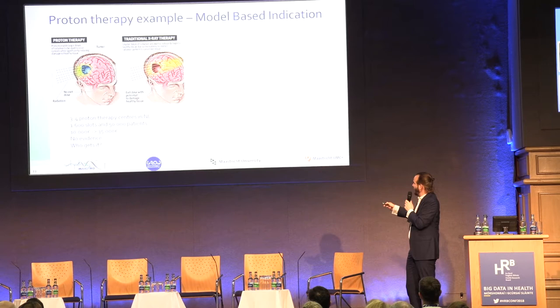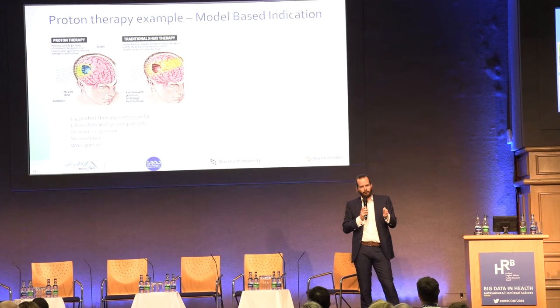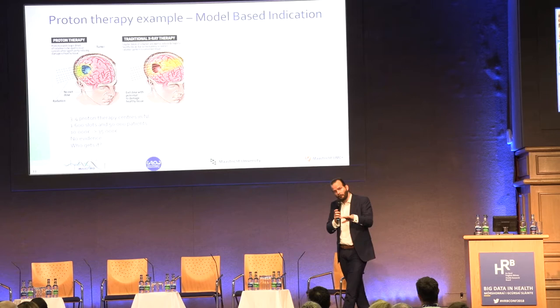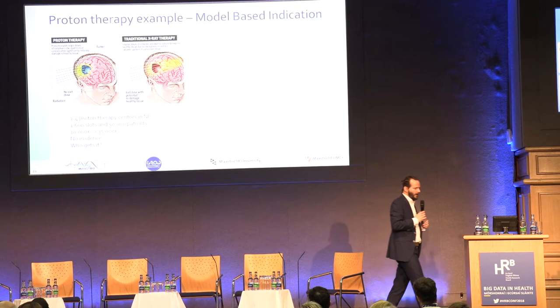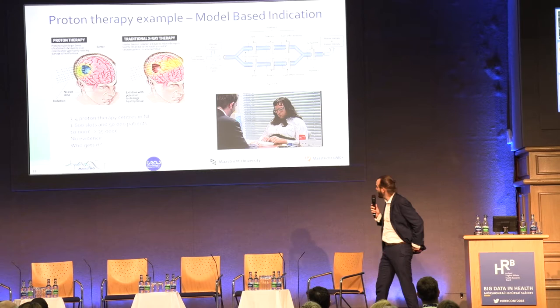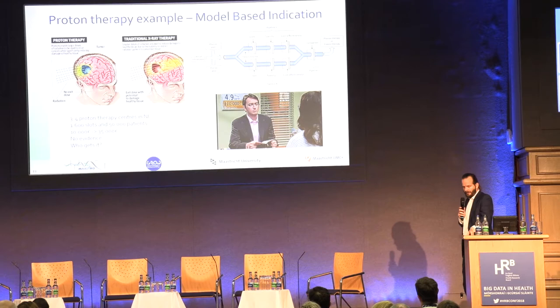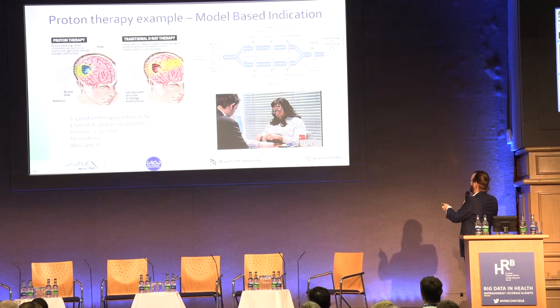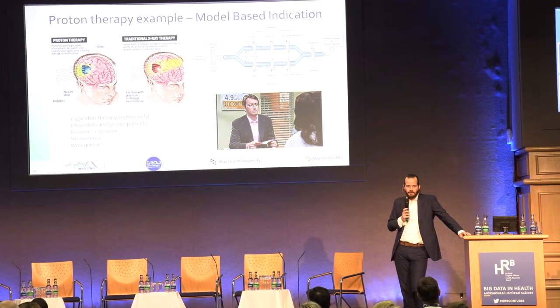In Holland we have about 50,000 patients every year who get radiation, but only 1,600 proton slots — because proton centers are very expensive to build. And we don't have evidence for proton therapy because you first have to build the machines before you can get evidence; you can't trial this technology first. So who gets it? We agreed with the government that the computer would decide: your data, clinical information, photon plan, and proton plan would be compared. In the middle is a toxicity prediction — that's where the AI plays a role. Only those patients where we see a really big reduction in toxicity are allowed to receive proton therapy.